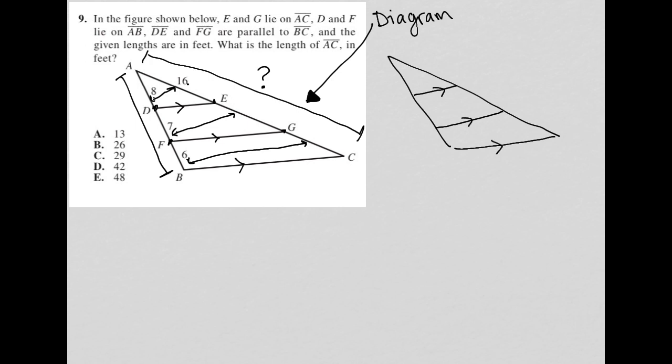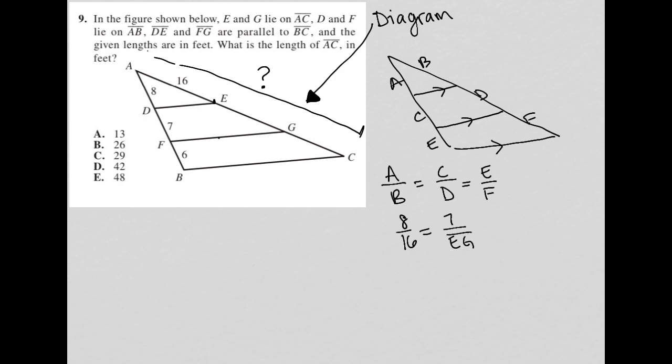So what I'm telling you is that we can relate side A to B and C to D and E to F. In fact, the relationship would be that the ratio of A to B is equal to the ratio of C to D equal to the ratio of E to F. So let's use that to answer this question. We have A to B, we know is 8 over 16 equals 7 over EG, and it equals 6 over GC.